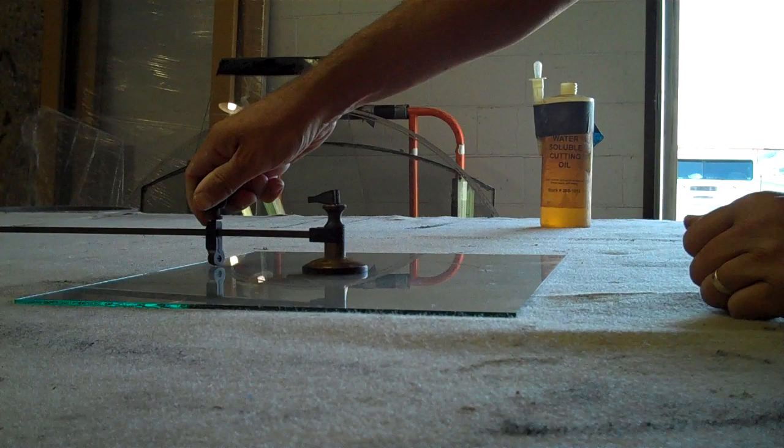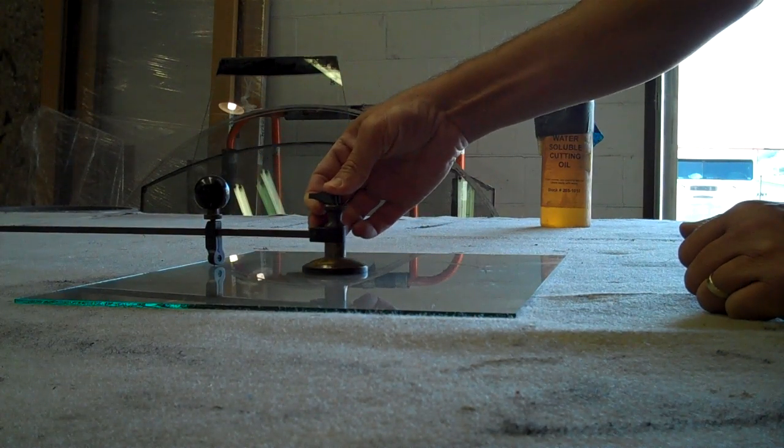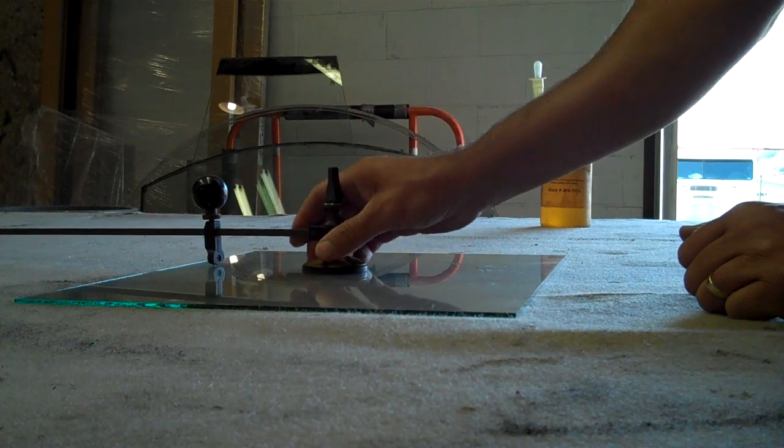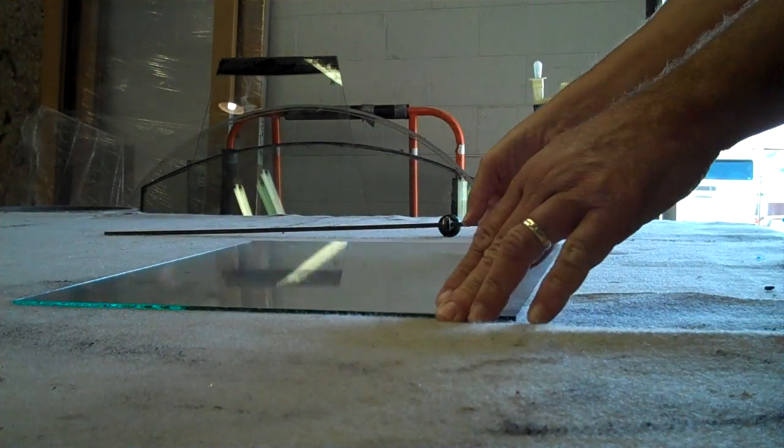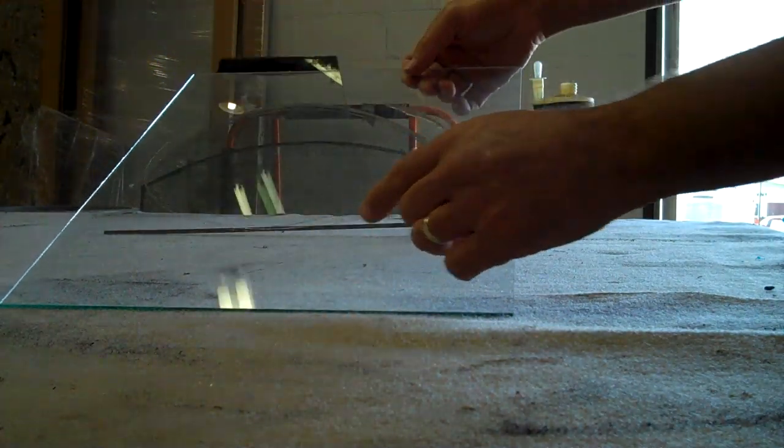And when I can hear that crunch noise there at the end, you know the two ends have met. Then I pop the circle cutter off here. Remove that. Now you might be able to see, you can see the score all the way around the glass.